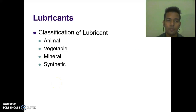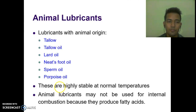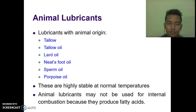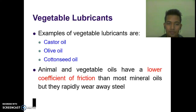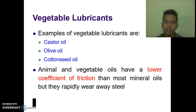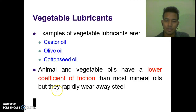Now, lubricants. The types of lubricants are animal lubricants, vegetable lubricants, mineral lubricants, and synthetic lubricants. Animal lubricants include those with animal origins like tallow, tallow oil, lard oil, neatsfoot oil, porpoise oil, etc. These are highly stable at normal temperatures. Animal lubricants may not be used for internal combustion engines because they produce fatty acids. Examples of vegetable lubricants are castor oil, olive oil, and cottonseed oil. Animal and vegetable oils have a lower coefficient of friction than most mineral oils, but they rapidly wear away steel.